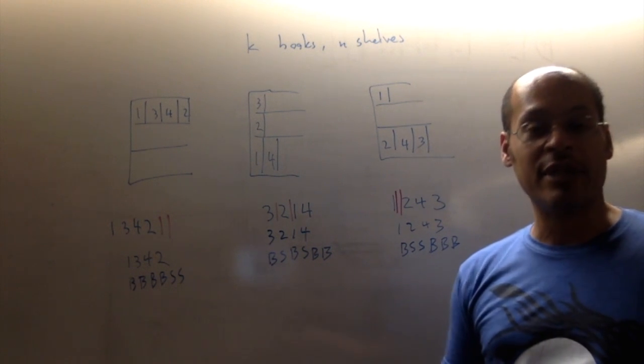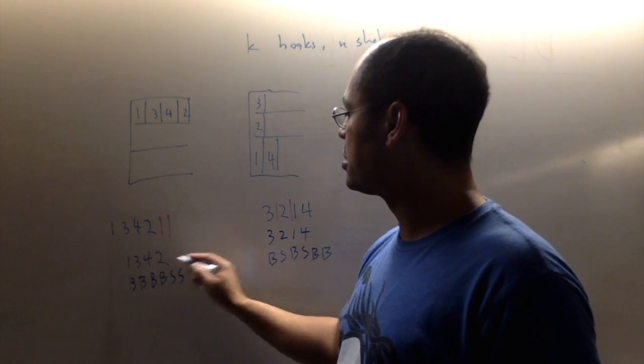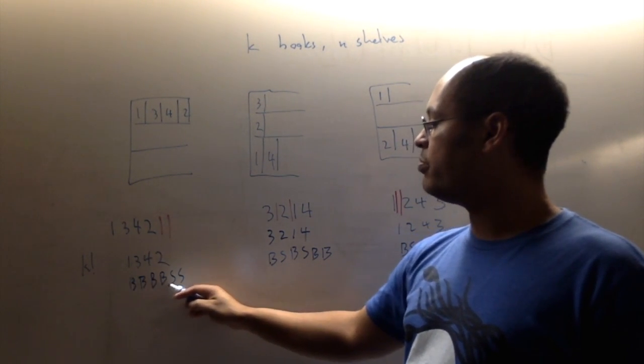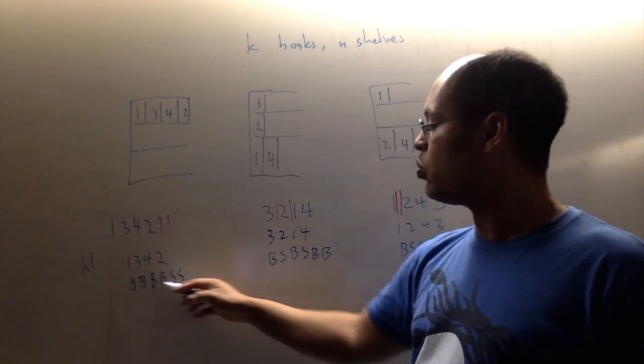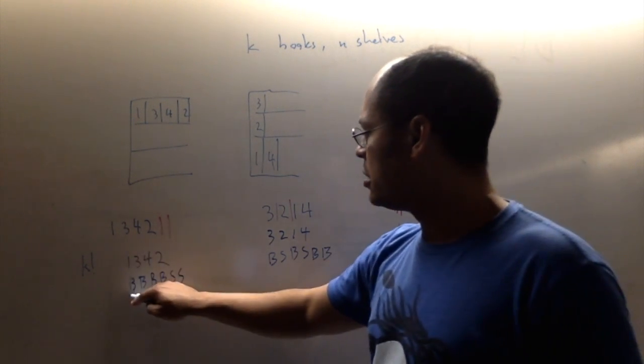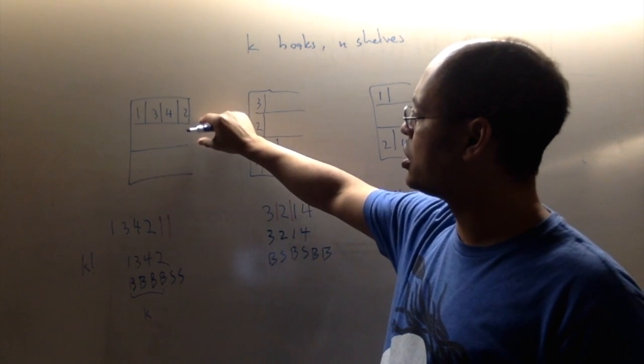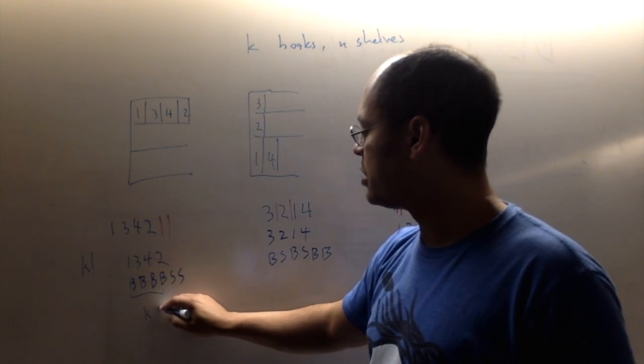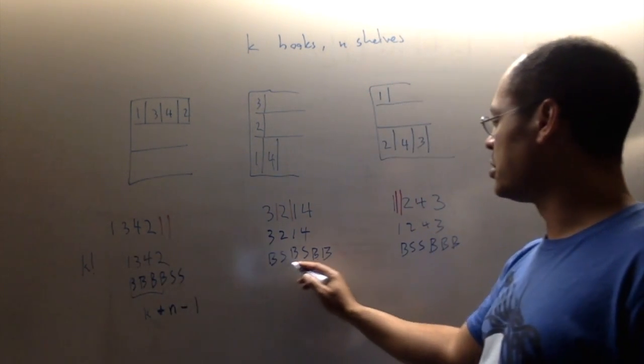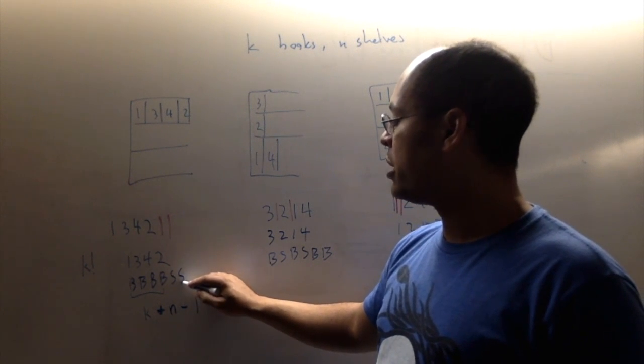So how many ways are there of doing these? Well, I have to first specify a permutation. So if I have k books, then there's k factorial ways of making a permutation of my books. And then I have to say how many books and how many shelf separators I need. And I need to pick which in my sequence are books and which things are shelf separators. So how many things are there in the sequence altogether? There are these four Bs or the four books that I have. So in general, there's k books. If there's three shelves, I need two shelf separators. And in general, I'm going to need n minus one shelf separators. So altogether, I have k plus n minus one letters, in this case six. I have k plus n minus one letters.